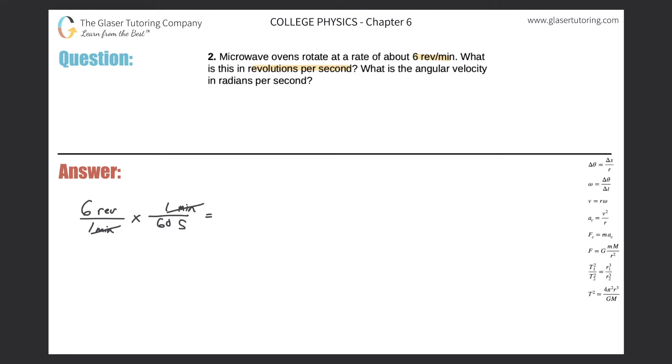So notice how the minutes will cancel, and then thus leaving you with six divided by 60. You can do that in the calculator—it's going to come out to be about a tenth, right? So 0.1 revolutions per second. That would be the answer to part A, or the first part of this problem.